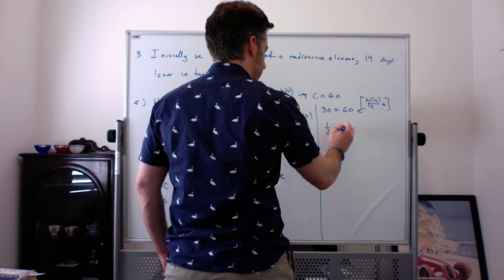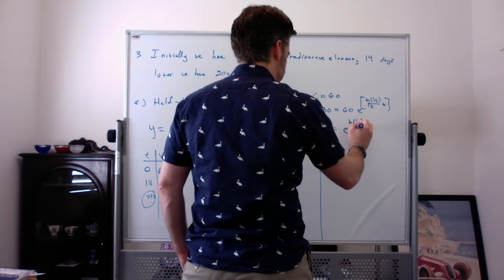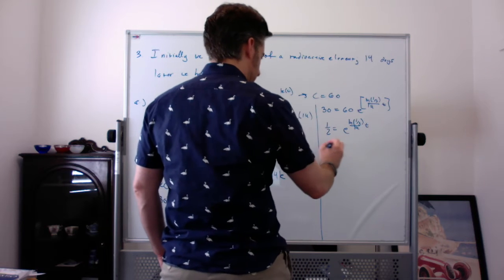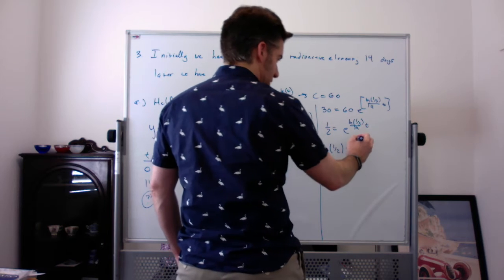Divide by 60, 1/2 equals e^(ln(1/3)/14 times t). Take the natural log of both sides. Natural log of e to the stuff is just the stuff.